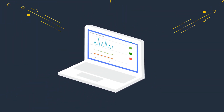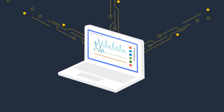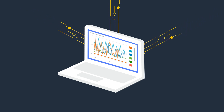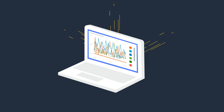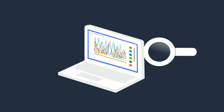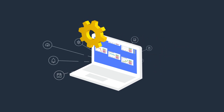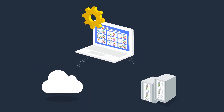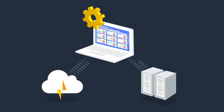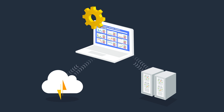CloudWatch provides data and actionable insights to monitor applications, analyze and respond to system-wide performance changes, optimize resource utilization, and get a unified view of operational health. CloudWatch collects data in the form of logs, metrics, and events, providing a unified view of AWS resources, applications and services, and on-premise servers.